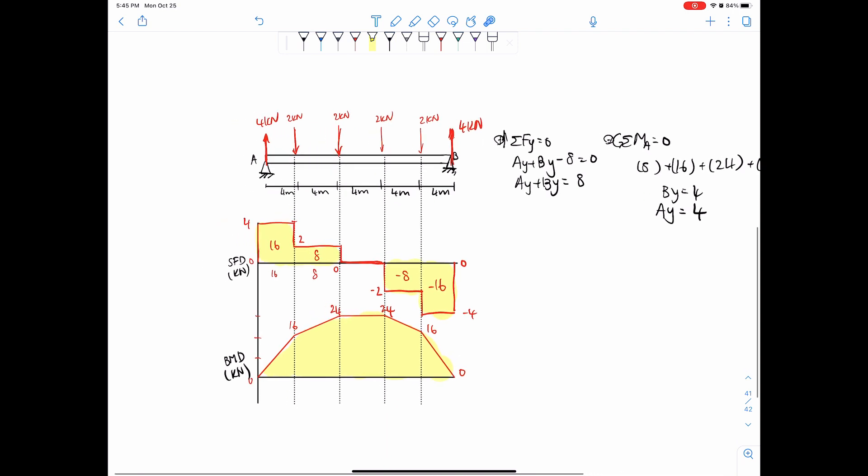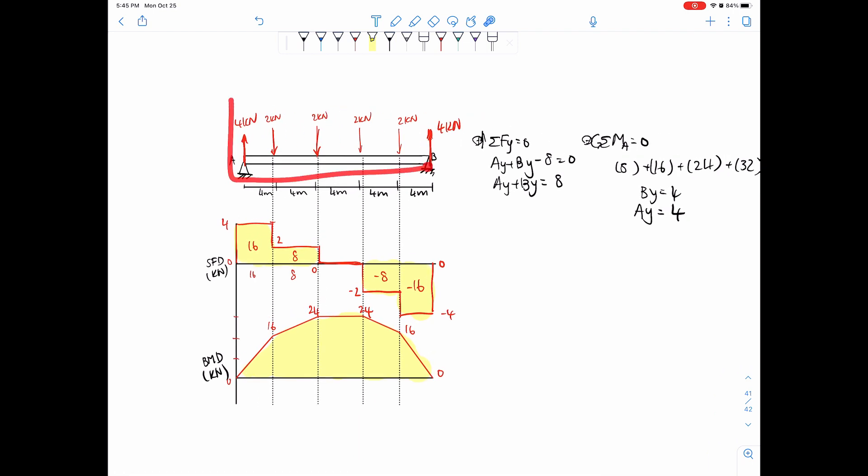Again, if you can't see that it's symmetrical, just use sum of forces and sum of moments. You get the same thing. Remember to add the area for straight lines because it's a rectangle. Negative area, you subtract by that amount.